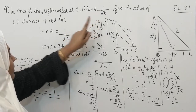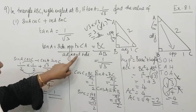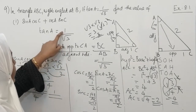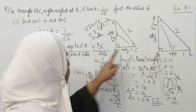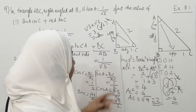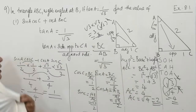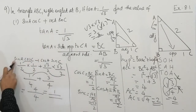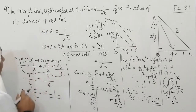Here tan A is equal to 1 by root 3. Tan A means side opposite to angle A divided by adjacent side. According to our question the opposite side measures 1 and the adjacent side measures root 3. After finding these two sides we find the hypotenuse by Pythagoras theorem, which gives 2. After finding all the sides we substitute the values: sin A is 1 by 2 into 1 by 2 plus root 3 by 2 into root 3 by 2.